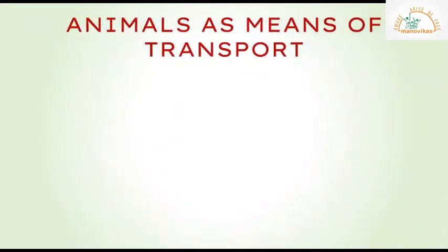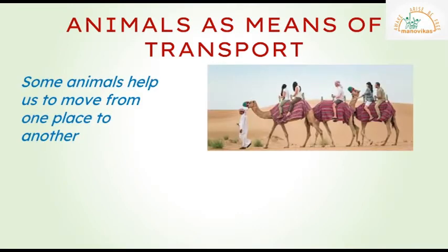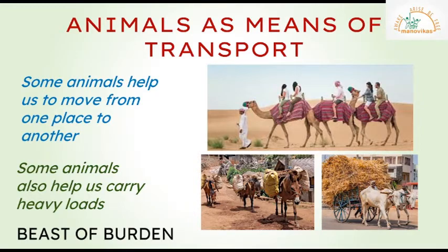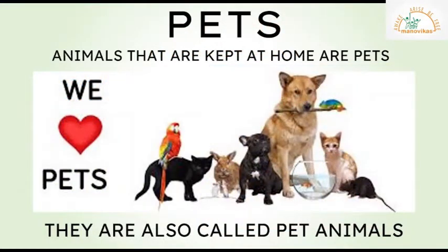Now let's learn about how animals help us to travel — that is called animals as means of transport. Some animals help us move from one place to another, and some also help us carry heavy loads, like horses, camels, donkeys, mules, and elephants. These animals are called beasts of burden.